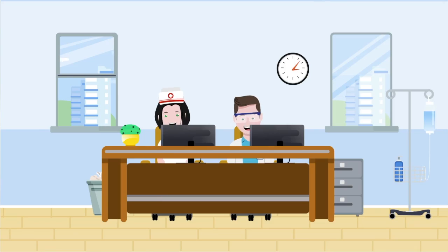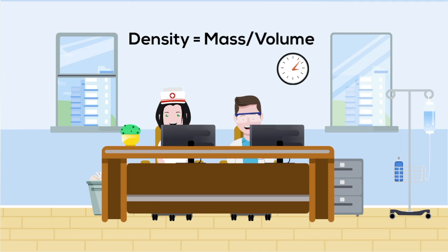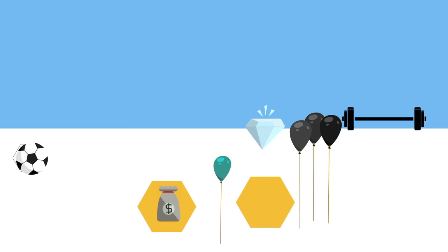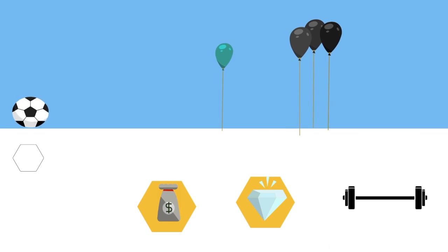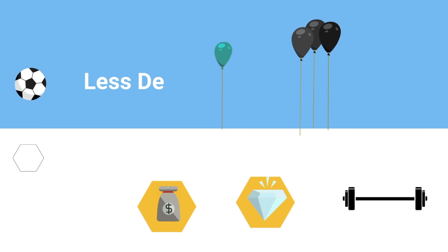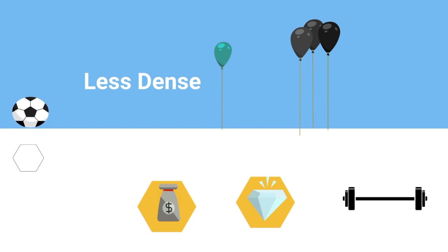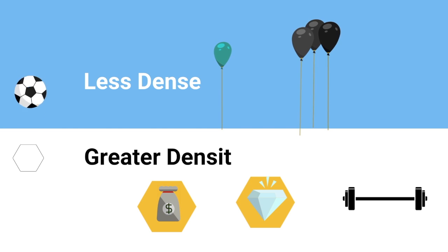Some of this is related to density. Density is equal to mass divided by volume. In the following demonstrations you will see how an object of less density will always try to settle on top of an object with greater density. So let's get started.